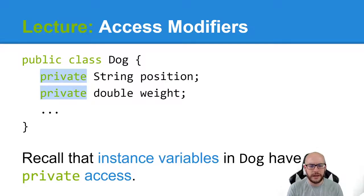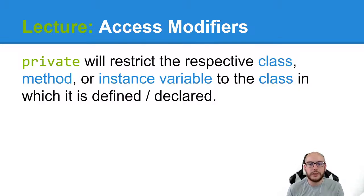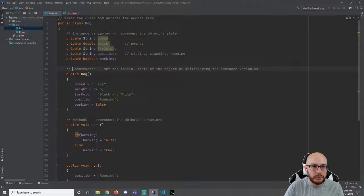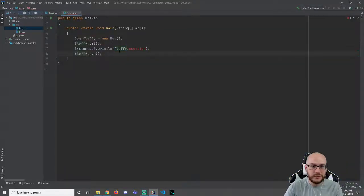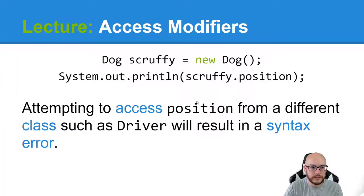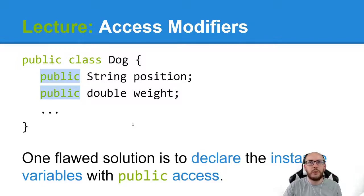Recall that instance variables in dog have private access. This is an access modifier — there are multiple options. Private will restrict the respective class, method, or instance variable to the class in which it is defined or declared. This private access modifier on these instance variables restricts access to this class. I can only see these things inside this class. In my driver, I can't see it — this is a completely different class. So if we attempt to access something like position from a different class such as the driver, we're going to get a syntax error.